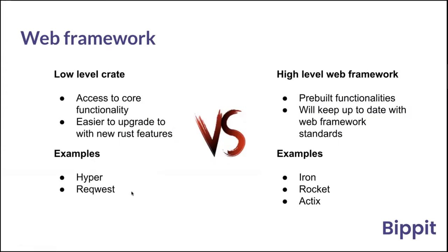Now I'll go through some of the crates we use and why we picked one over another. At the very beginning, we had to decide on a web framework. The school of thought was we could go with a lower-level crate like Hyper or Reqwest, or with more full framework solutions like Iron — which was dominant when we had to make this decision, though I don't think it exists anymore — or others like Actix, Rocket, and Tide.